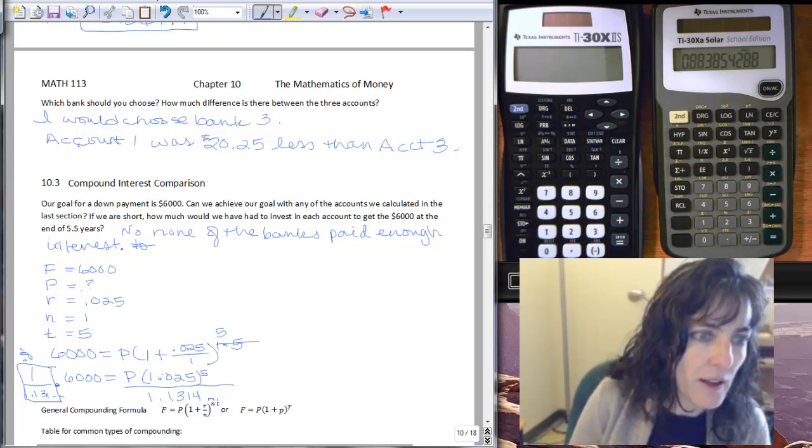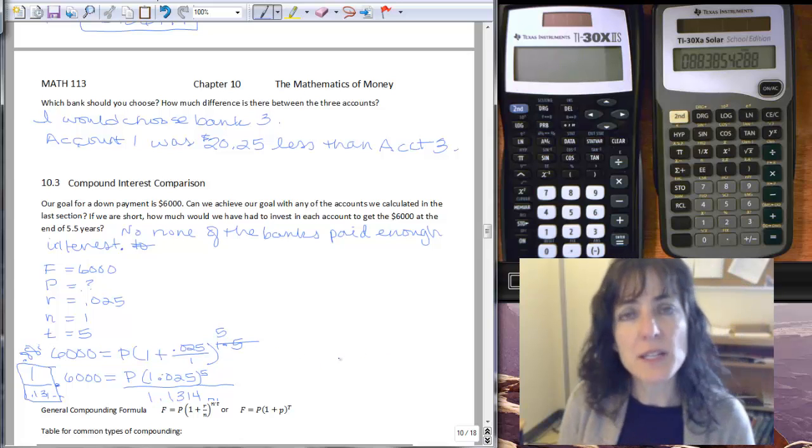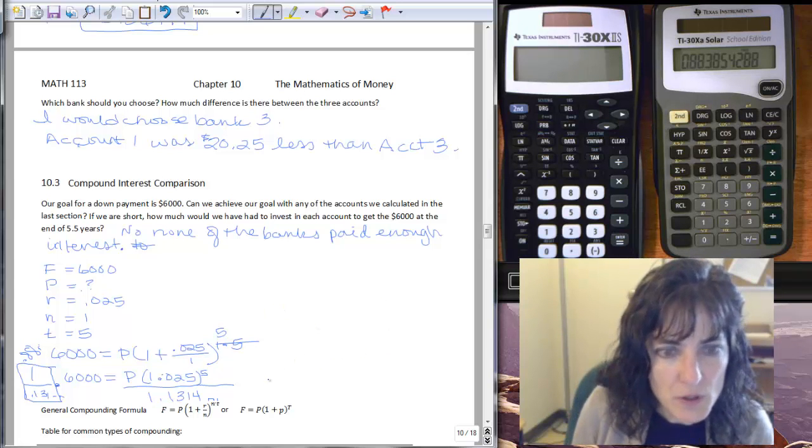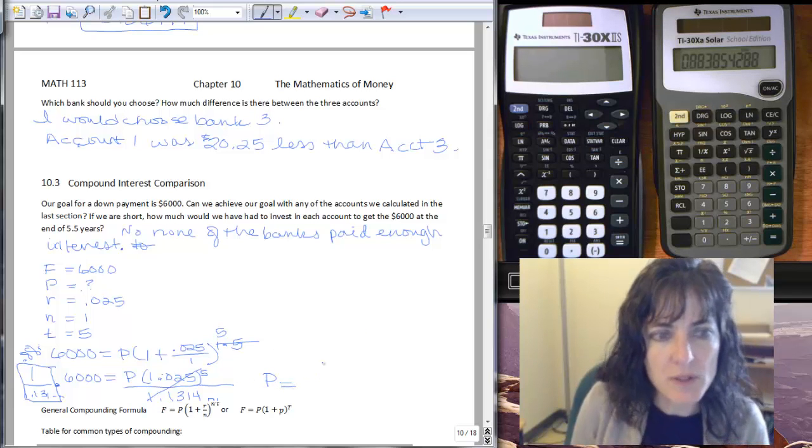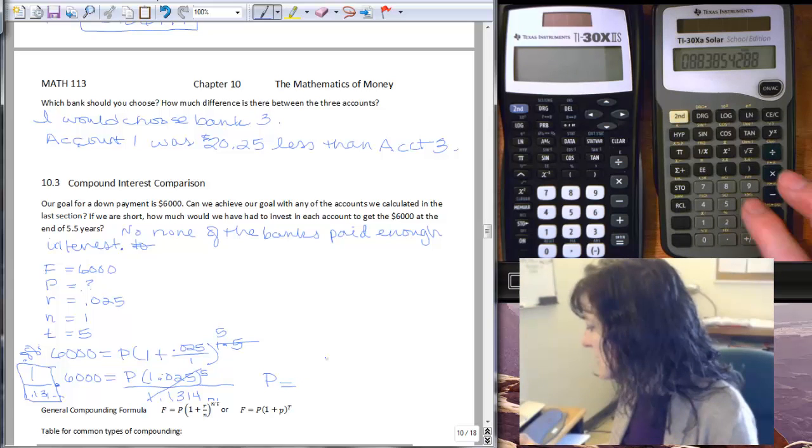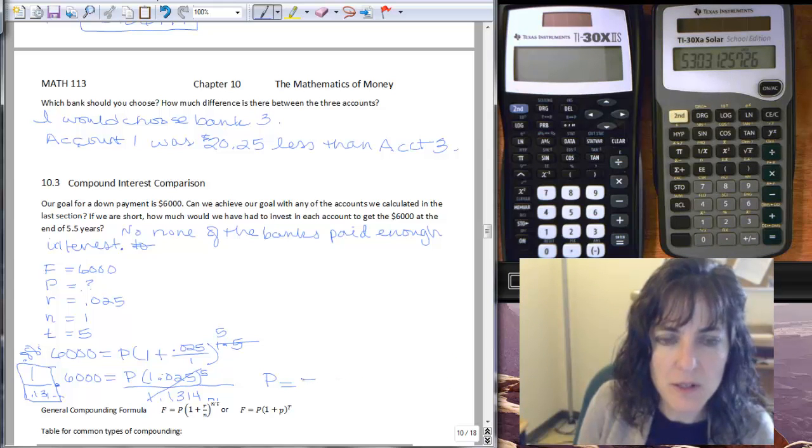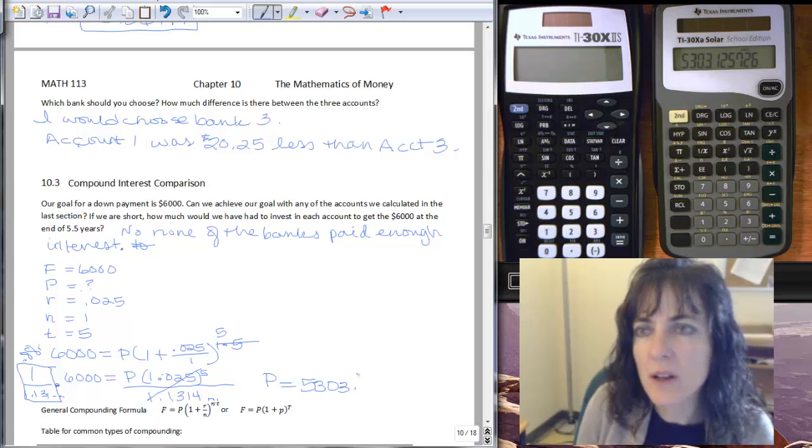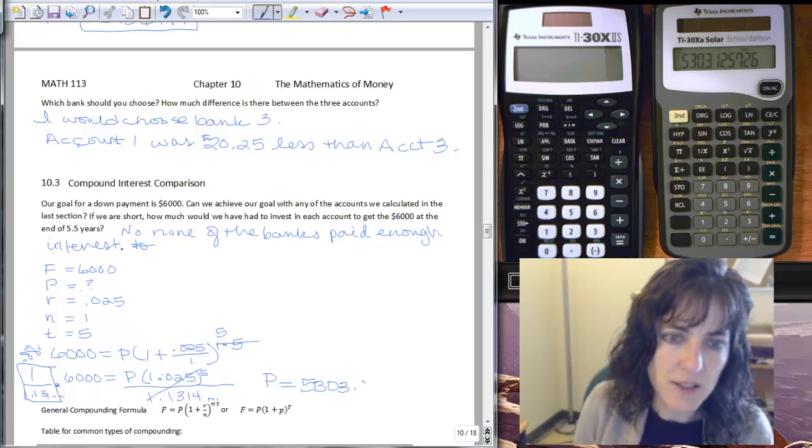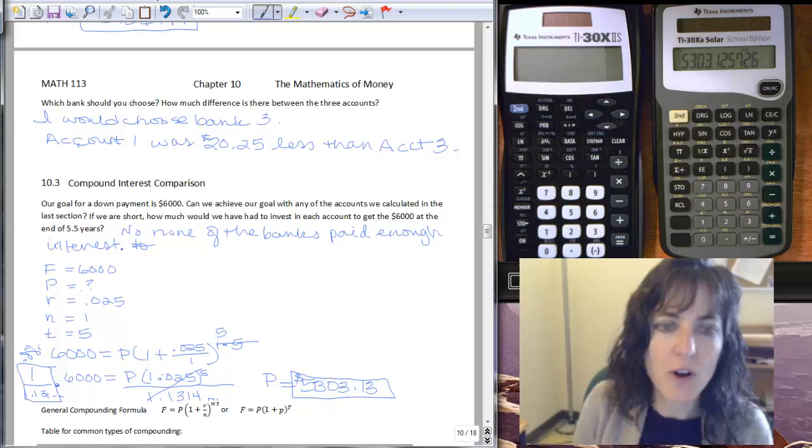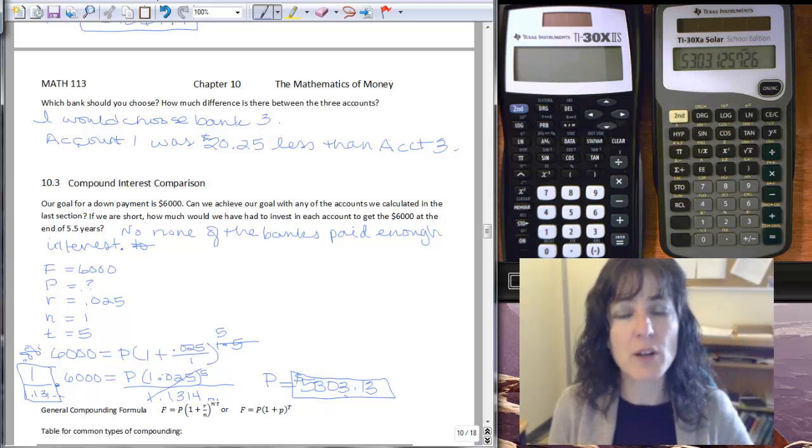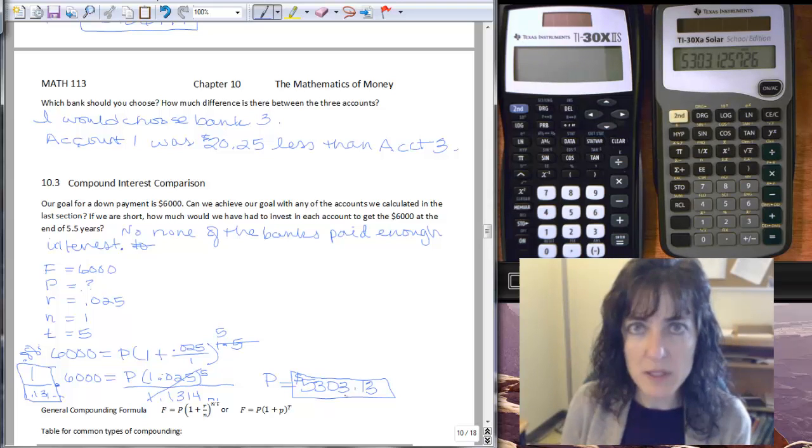This is the 0.88, and on and on. So I just need to multiply that by the 6,000, so I'll have P because these are going to cancel here. P equals, and then remember, multiply by 6,000, and I have $5,303.13, it looks like, if I round properly.